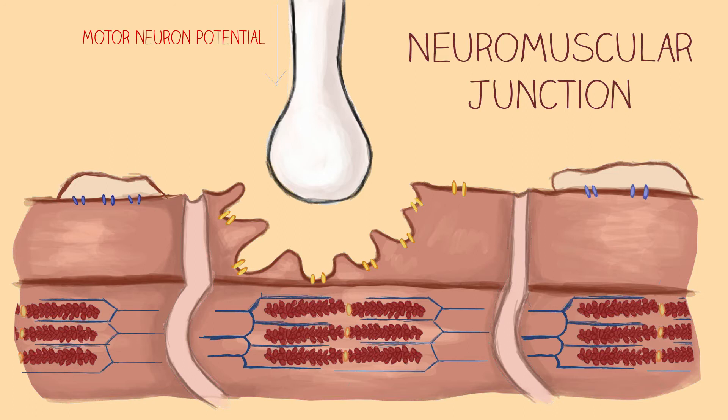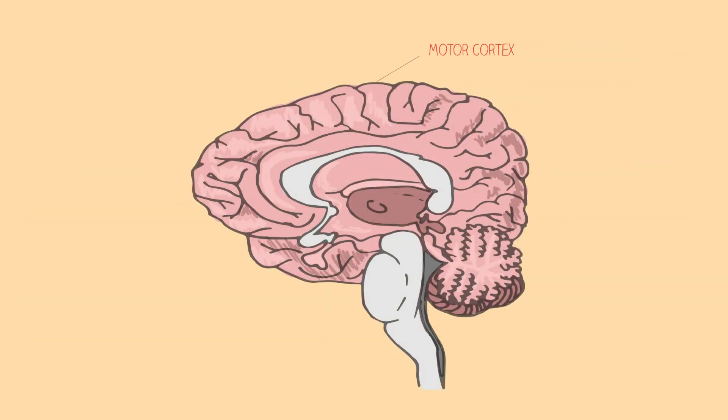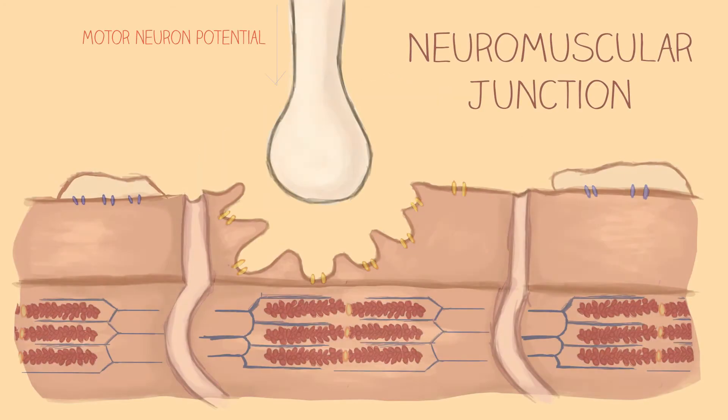First, a neuron action potential will be sent from the motor cortices of the cerebrum, down the spinal cord, out the nerves, and to the muscle fibers of the specific muscle that is to be contracted.